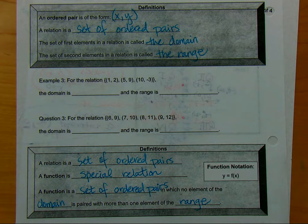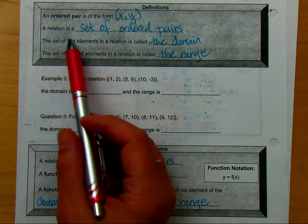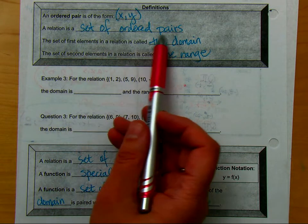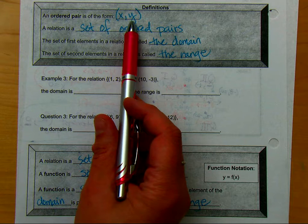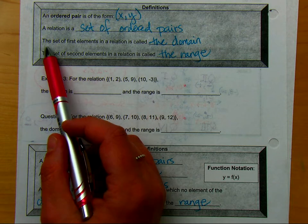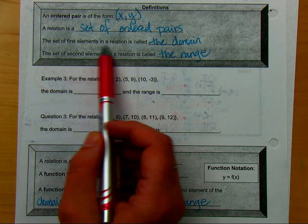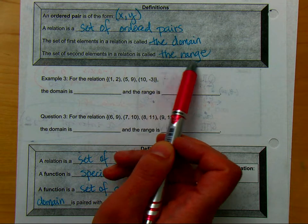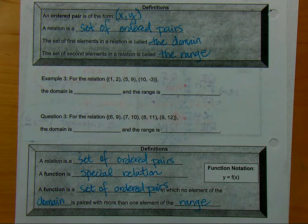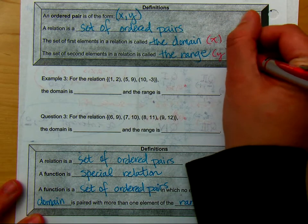An ordered pair is in the form XY. We were just talking about graphing ordered pairs, and a relation is a set of ordered pairs. So it takes an X and a Y to make a relation. The set of the first element is called the domain, the set of the second element is called the range. So the X is the domain, and the Y is the range.